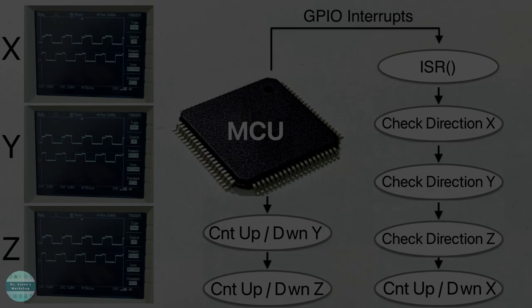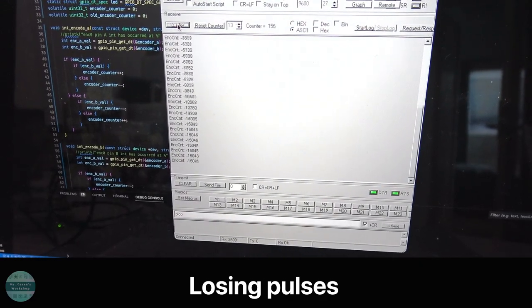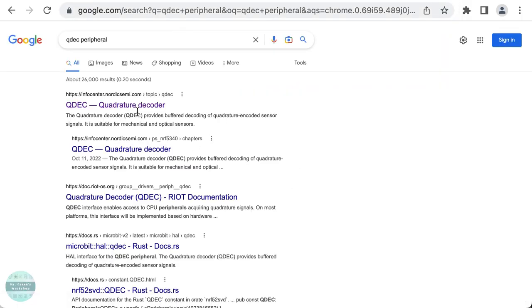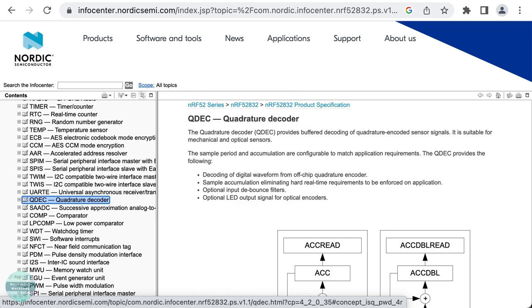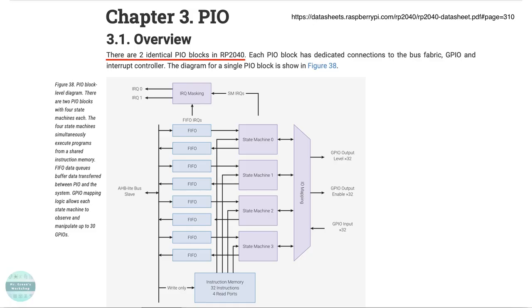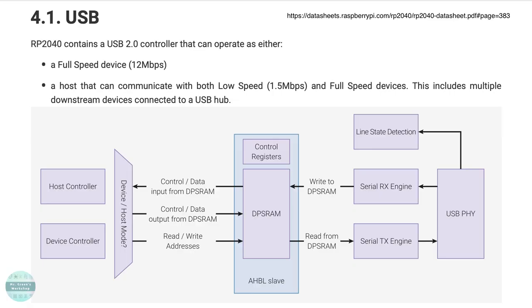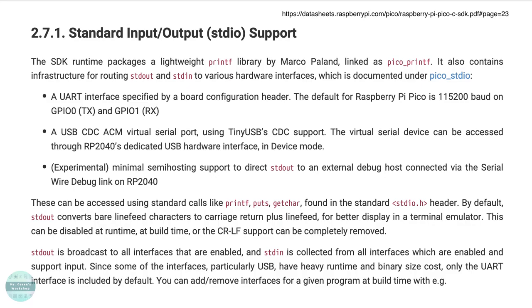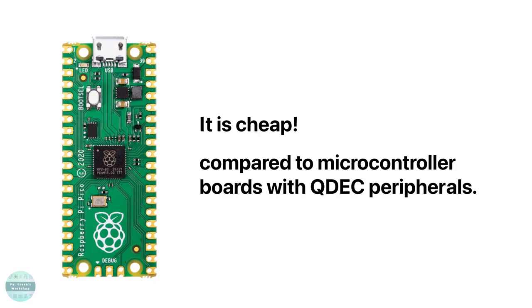A microcontroller with a quadrature decoder peripheral is usually required to count such high frequency pulses. Luckily, Raspberry Pi Pico has two programmable IO peripherals called PIO, which consists of four state machines each, and allows us to make fast GPIO operations without using CPU cycles. It also has USB controller that we can use as USB serial device to get the coordinates, plus it's cheap.